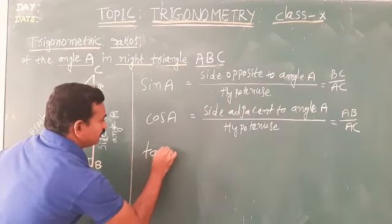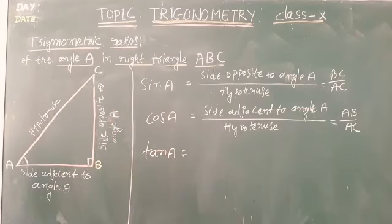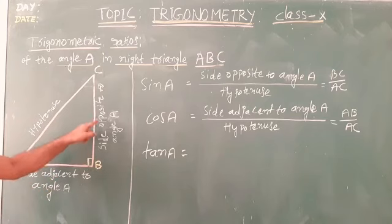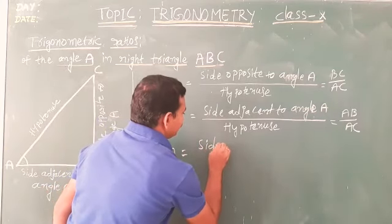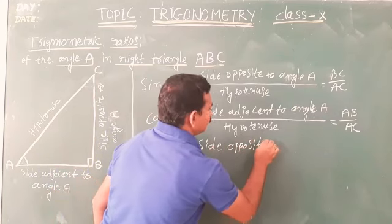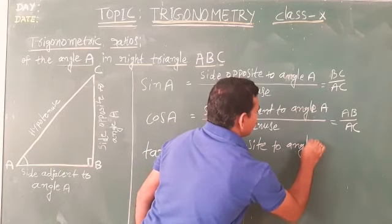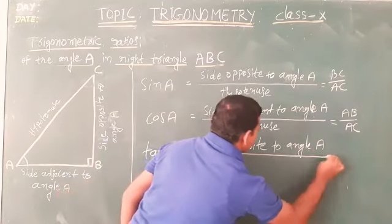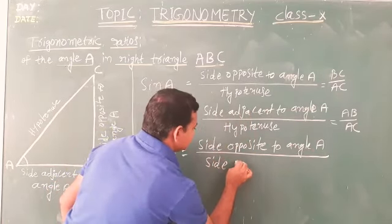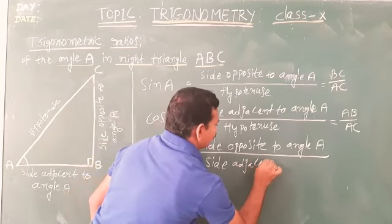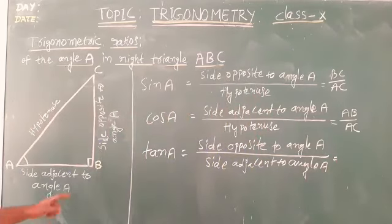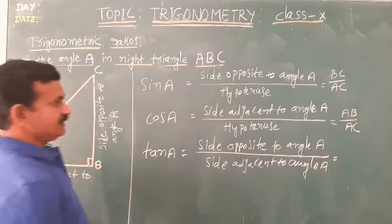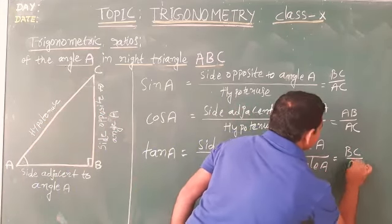The third one is tangent. Tangent is also the ratio of two sides. Tan A is the side opposite to angle A divided by the side adjacent to angle A, which in this triangle is BC by AB.